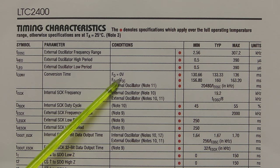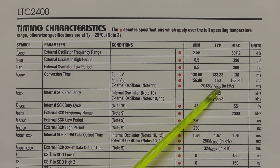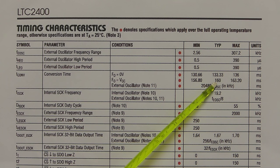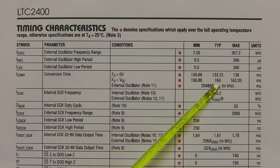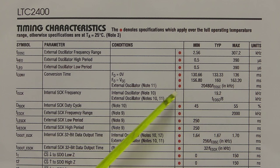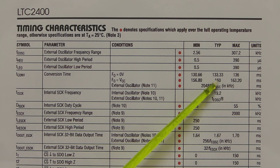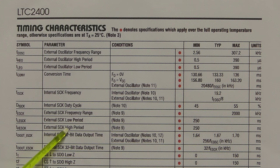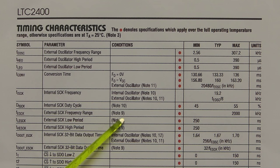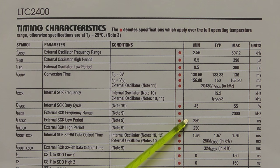We'll be selecting the 50 Hz notch filter, therefore the FO pin will be connected to plus five volts. Looking across the datasheet, it tells us the conversion time is 160 milliseconds. We'll have to allow at least that amount of time in our software for the conversion to take place — converting the analog voltage input to a digital stream of information. The other oscillator we'll be using is the one to clock the serial data out of the IC, and I'll be using the external oscillator from the Arduino to do that job.